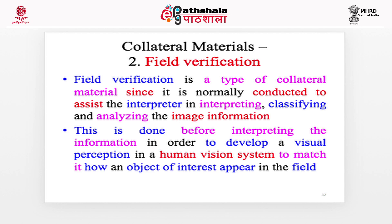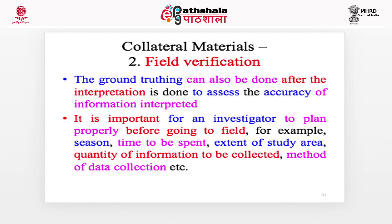Field verification is a type of collateral material normally conducted to assist the interpreter in interpreting, classifying, and analyzing the image information. This is done before interpreting the information, to develop a visual perception in the human vision system to match how an object of interest appears in the field. Ground truthing can also be done after interpretation to assess the accuracy of the interpreted information. It is important for an investigator to plan properly before going to the field — for example, season, time to be spent, extent of the study area, quantity of information to be collected, and method of data collection.